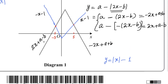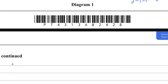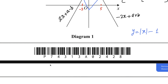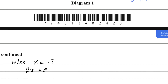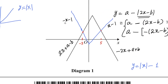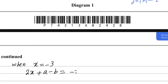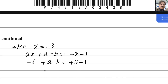Looking at the left-hand side, the two lines intersect at x equals minus 3. Setting 2x plus a minus b equal to minus x minus 1, and substituting x equals minus 3: 2 times minus 3 gives minus 6, so minus 6 plus a minus b equals minus(minus 3) minus 1, which is 3 minus 1 equals 2. Bringing minus 6 to the right side gives a minus b equals 8. This is equation number one.